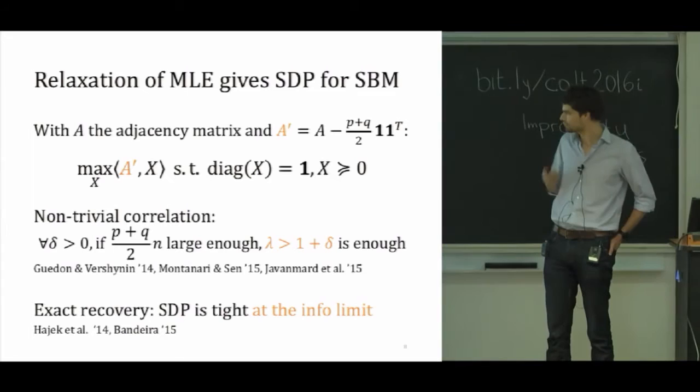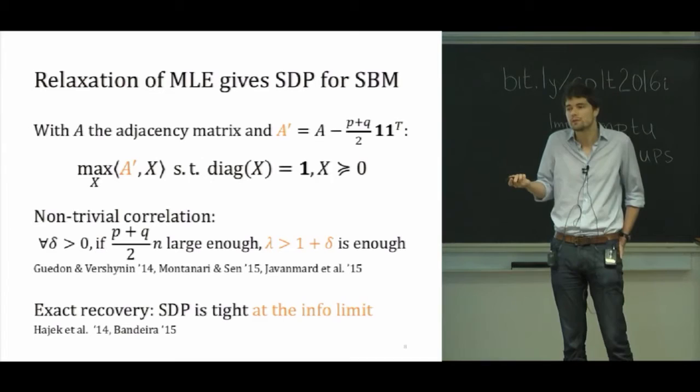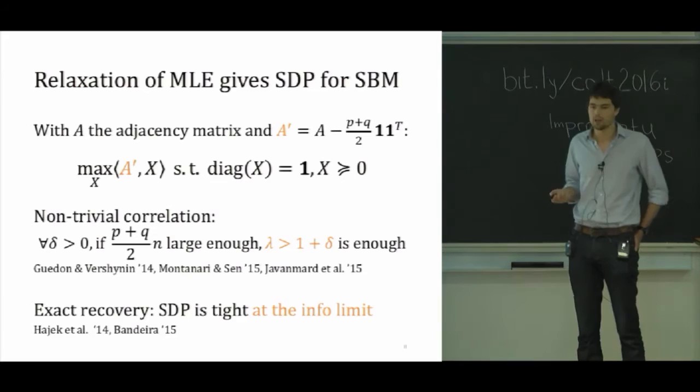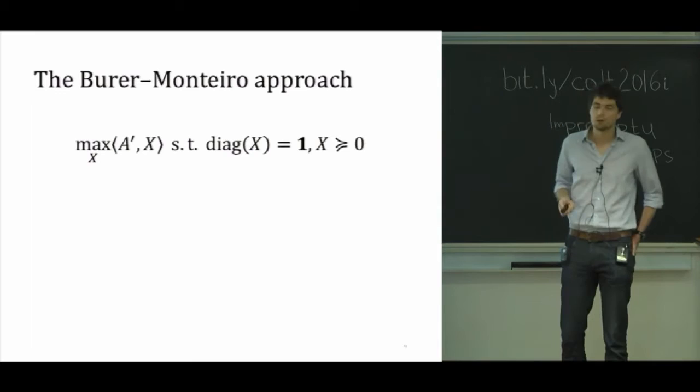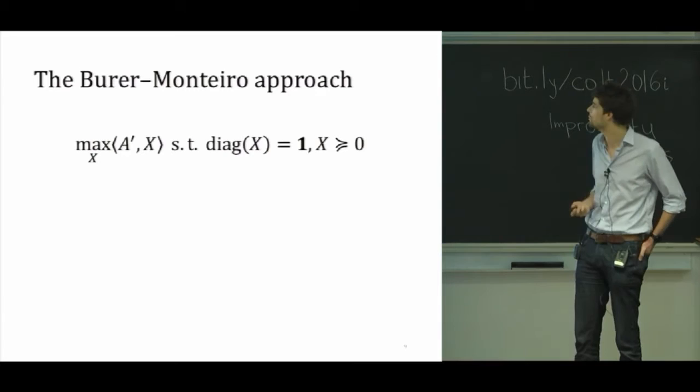Anyway, the point is, if you solve this SDP, and you can do this in polynomial time, you can get pretty close to what the information limit tells you. So now we want to solve the semi-definite program. And my point is going to be that even though this you can do in polynomial time, it can take a while. And so I'm going to describe now a simple-minded alternative. And I'll try to show that for the statistical problem at hand, it actually makes sense to consider that alternative, even though it's going to be a non-convex formulation.